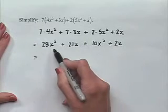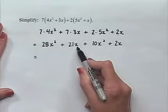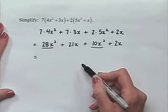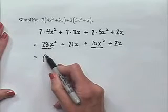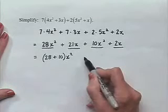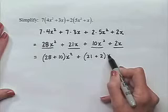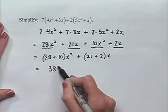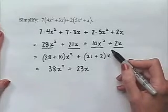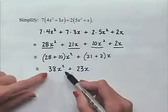At this point we combine like terms. Like terms require exactly the same variable expression, so x squared terms cannot combine with x terms. We have 28x squared and 10x squared as like terms; combining gives 28 plus 10 equals 38, so 38x squared. We have 21x and 2x as like terms; combining gives 21 plus 2 equals 23, so 23x. The simplified result is 38x squared plus 23x.